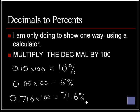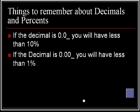Things to remember about decimals and percents. If a decimal is zero point zero blank, you're going to have a percentage of less than ten percent. So, example, say if this number was zero point zero seven. And I'm going to go zero point zero seven times one hundred equals seven percent. Right? Less than ten percent.